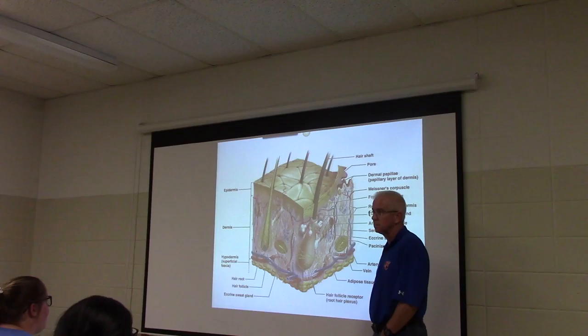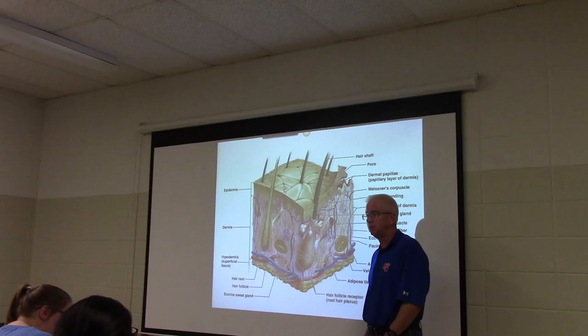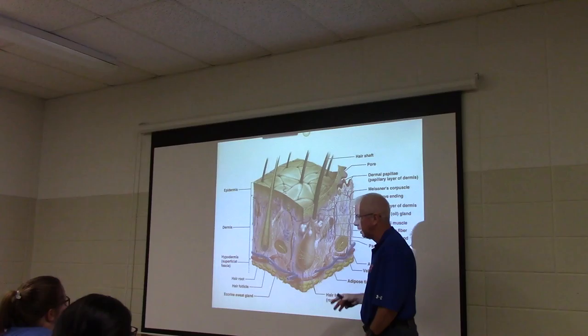What kind of tissue is it? Dense, irregular. And what do you mean by irregular? If I'm going to describe a tissue, what's not laid out? The collagen fibers — the arrangement of protein describes it. It's dense, irregular — that's what the dermis is.